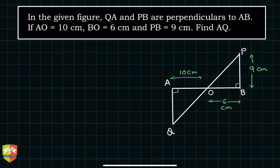Clearly there are two triangles visible in this figure and they appear to be similar as well. So hence I will write triangle AOQ and triangle BOP.